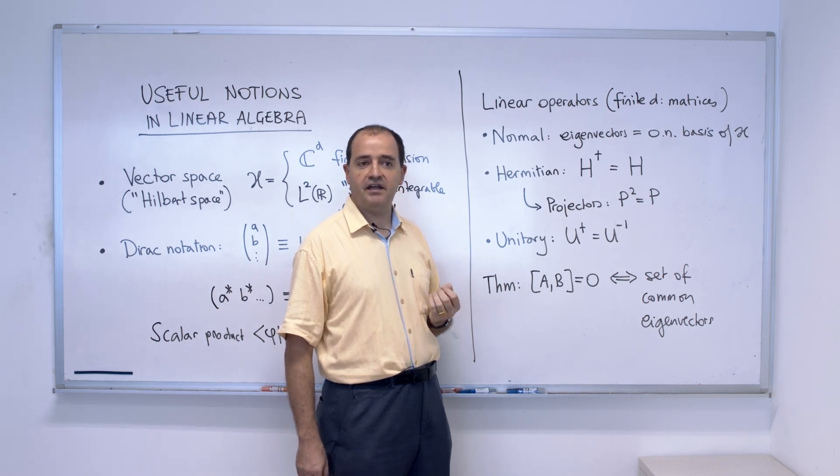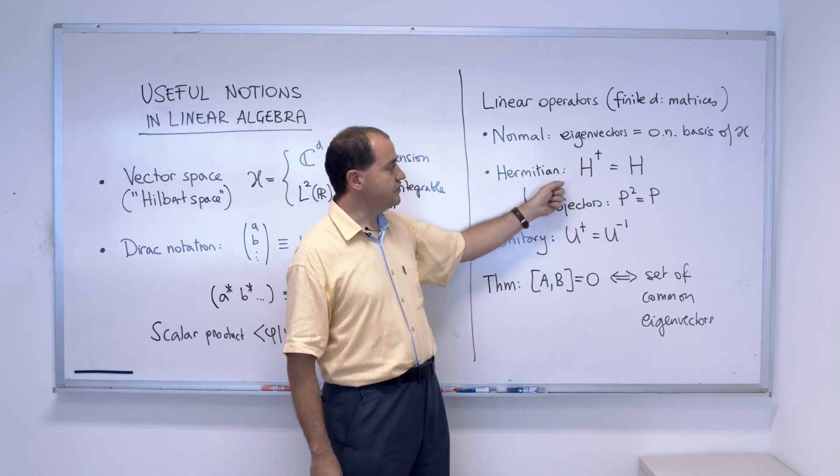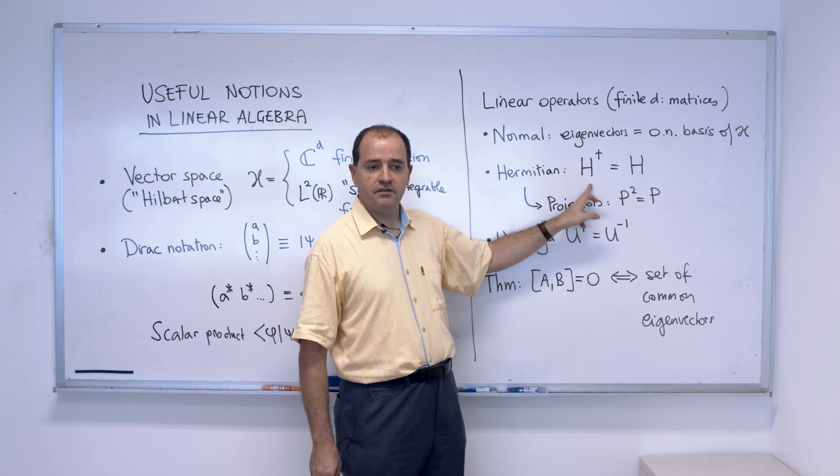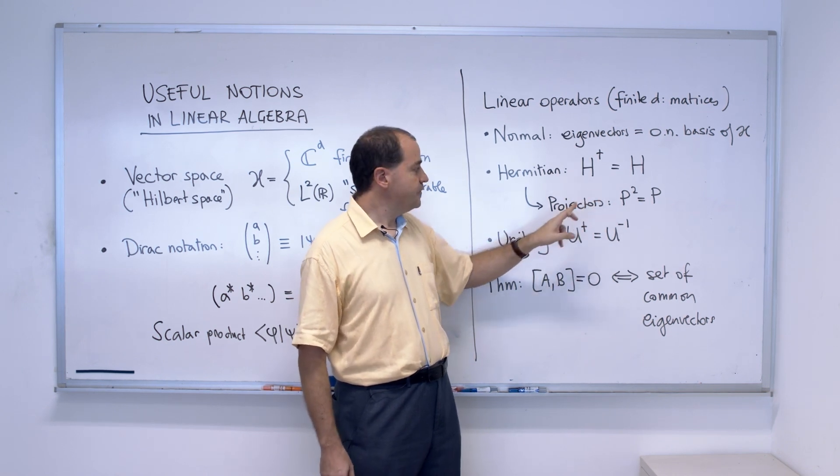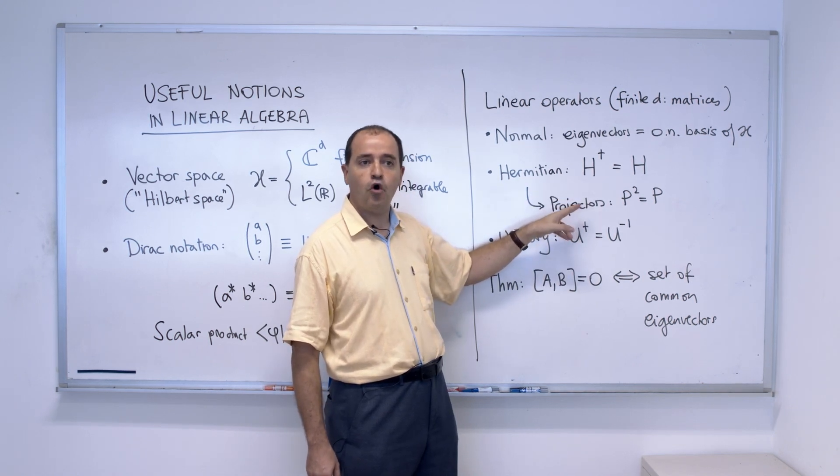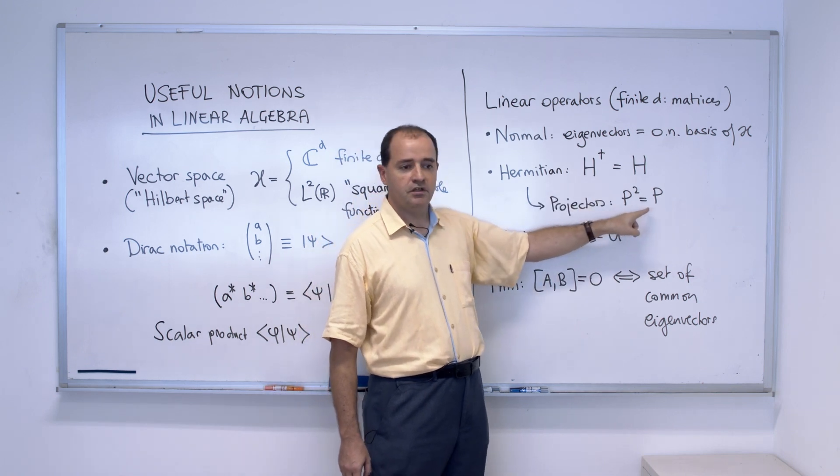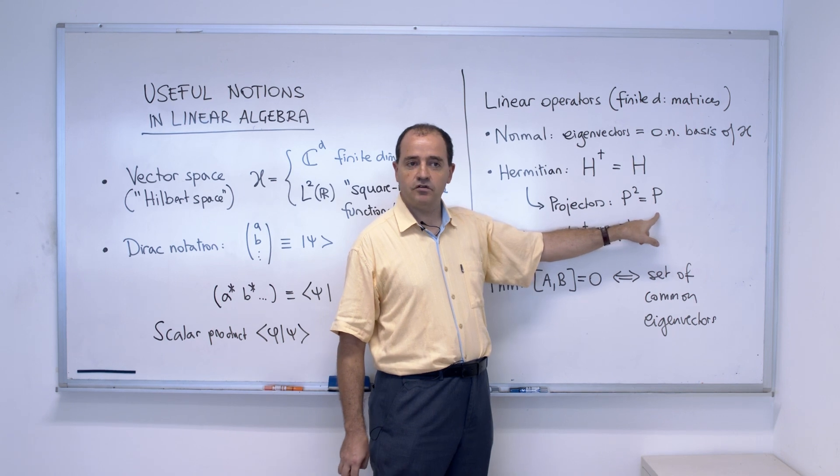Among the normal operators, there are some classes that are going to be very useful. The Hermitian operators are those that are equal to their adjoint. The notion of adjoint should be known from basic linear algebra. A special case of Hermitian operators are the projectors, the orthogonal projectors. And these are Hermitian operators which, in addition, when you apply them twice, is the same as apply them once. It's called idempotent.